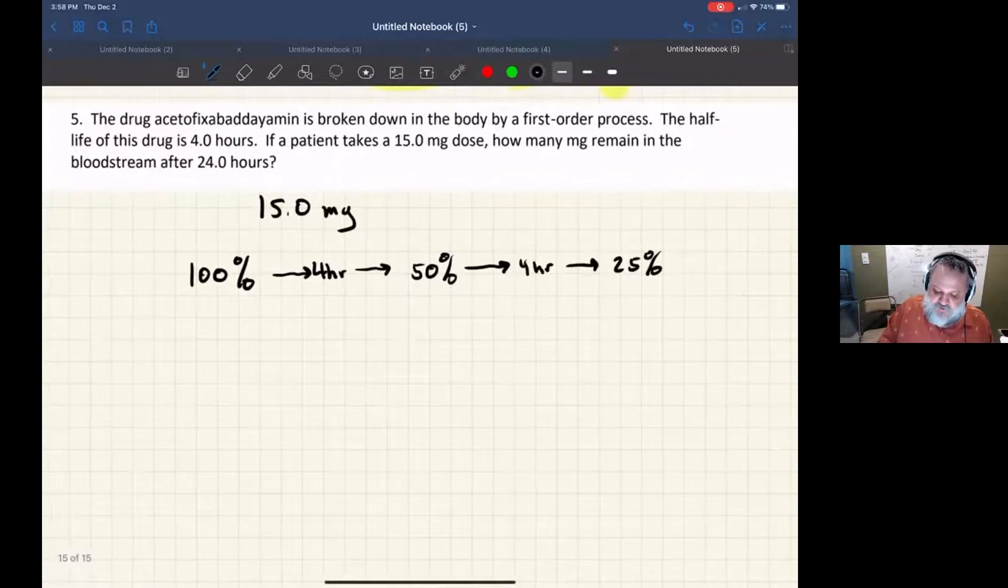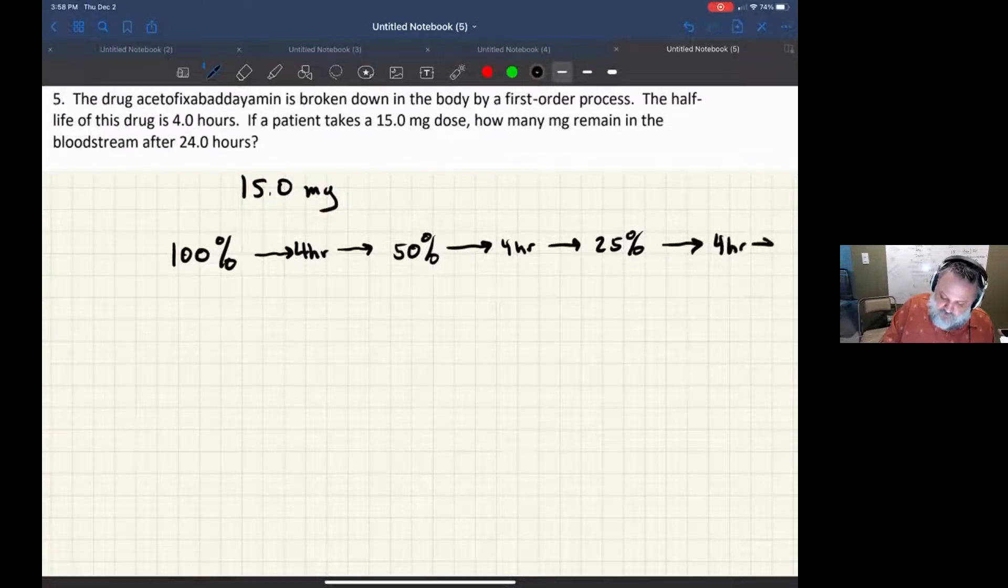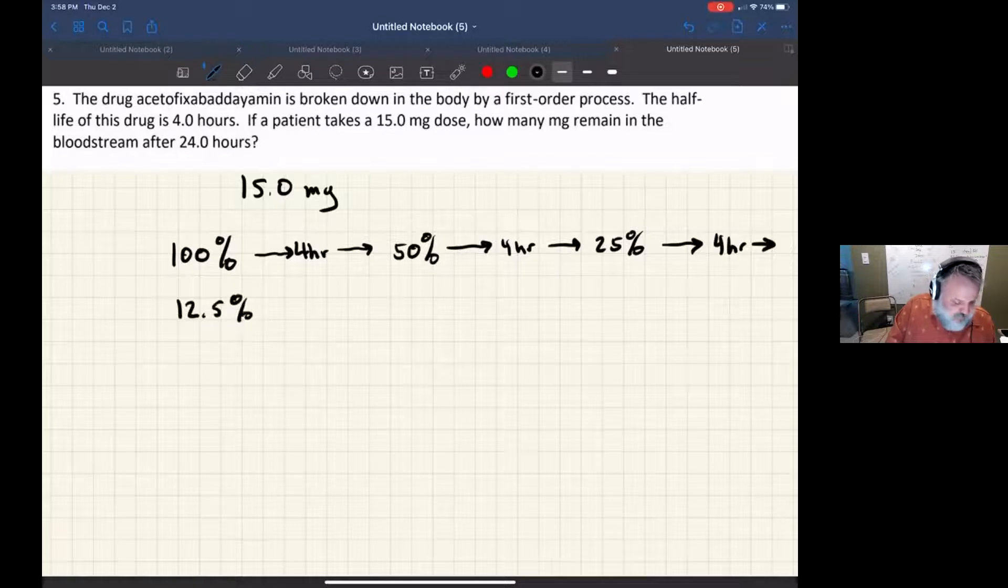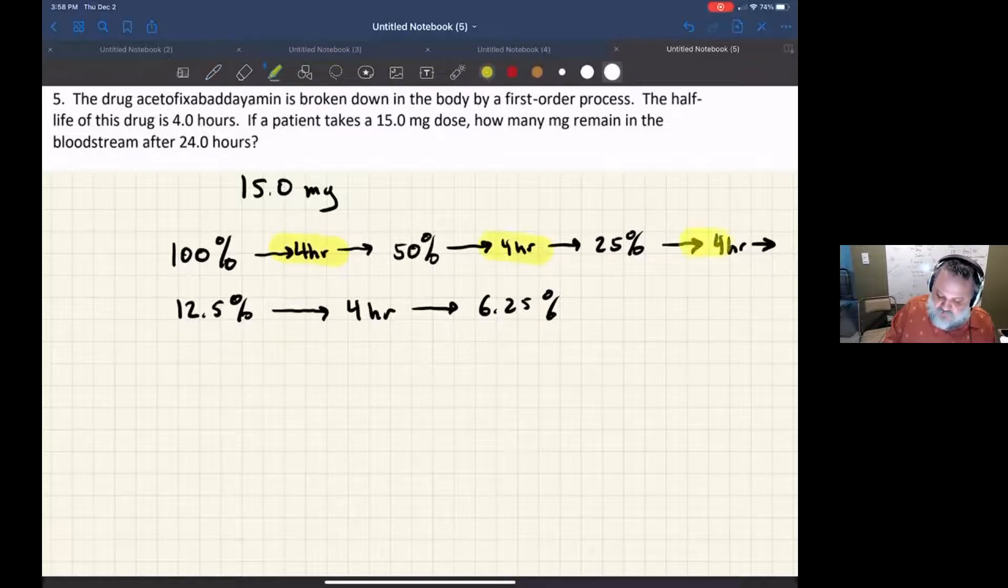And so this continues. So after another four hours, I'll have 12.5%. We've got to keep going. What's half of 12.5%? So another four hours later, I get 6.25%. How many hours has it been total? I've got four, plus four is eight, plus another four is 12, plus another four is, looks like we're up to 16.